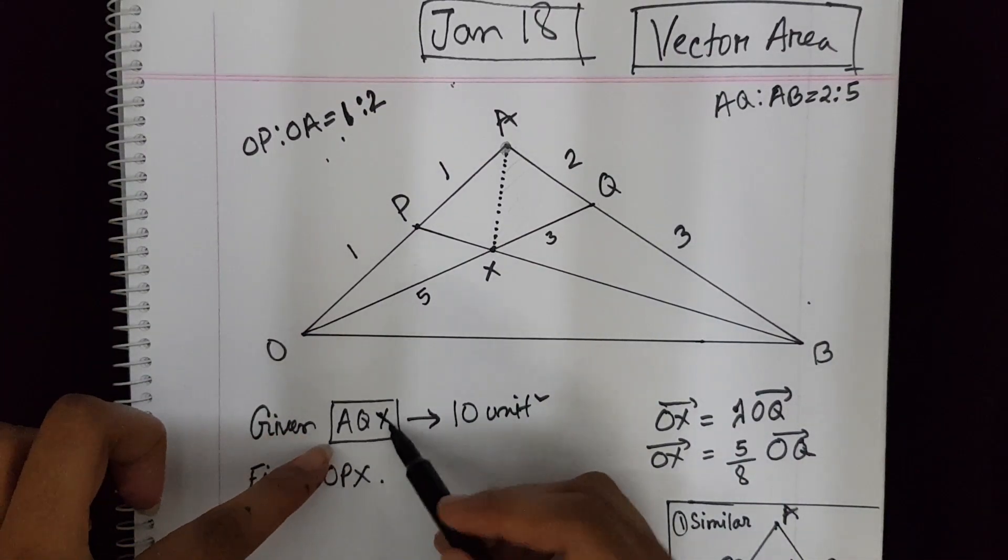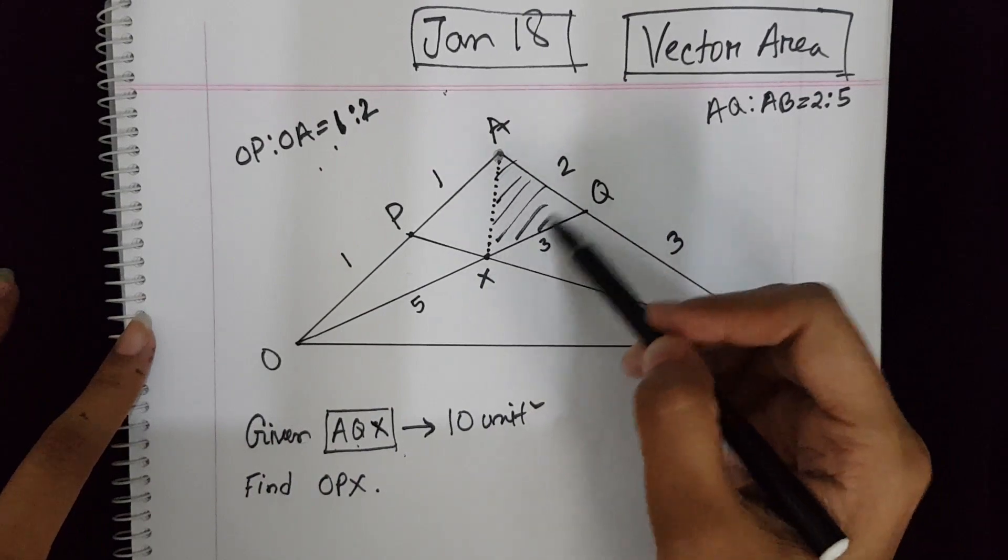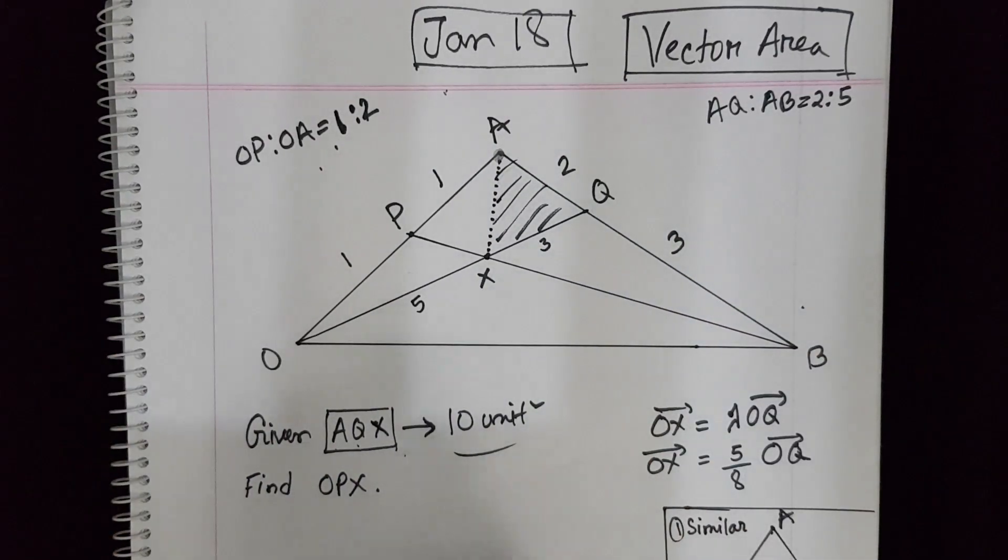We have the value of triangle AQX. This triangle area is 10, given. And we need to find the area of triangle OPX.